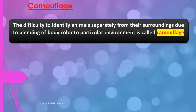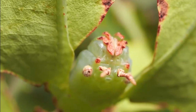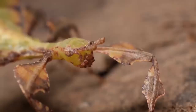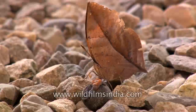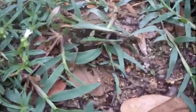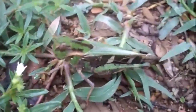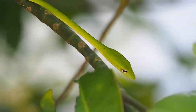Animals that show camouflage include the leaf insect, moth, grasshopper, butterfly, caterpillar, and snake.